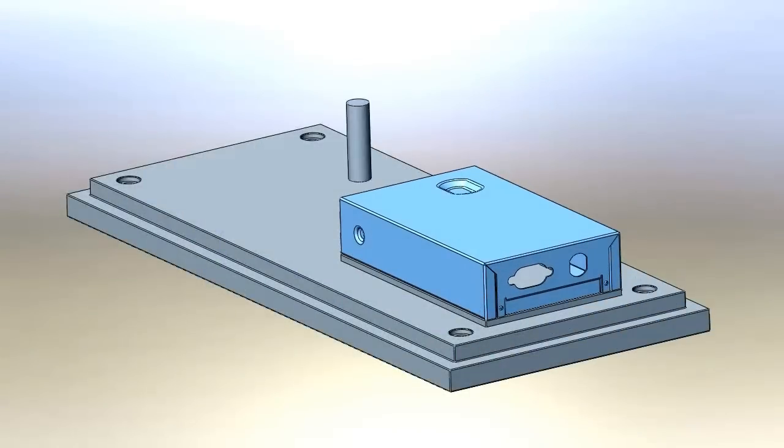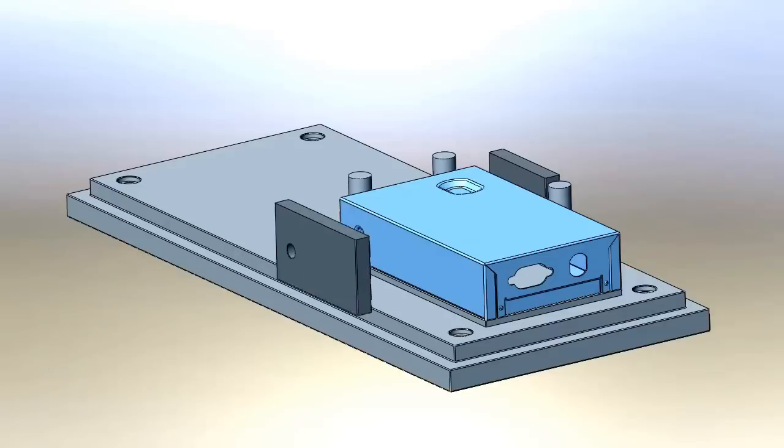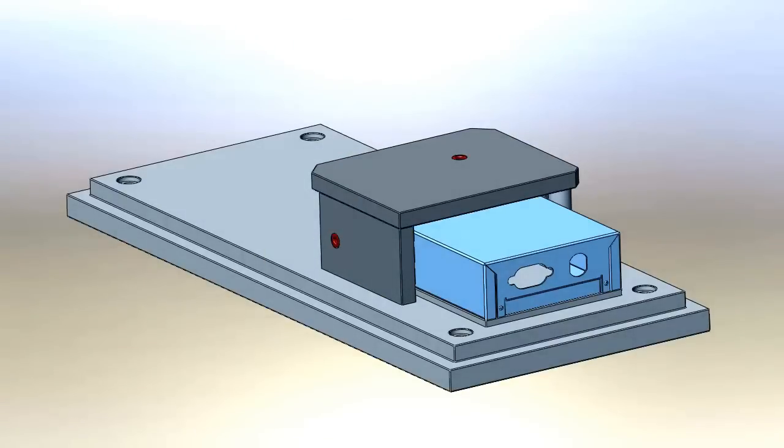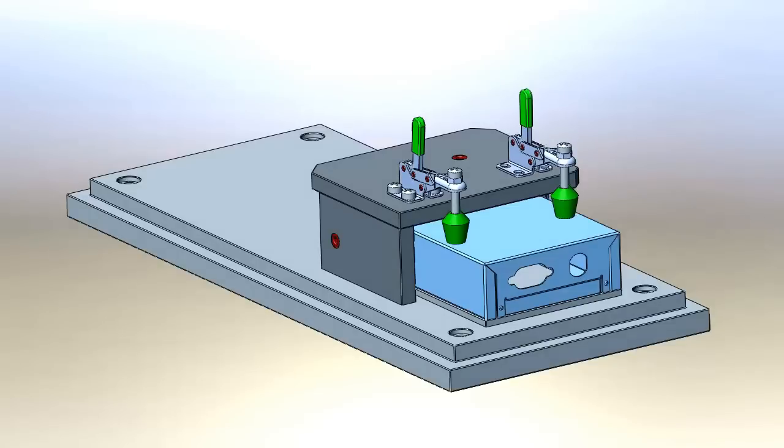Indexing pins are placed according to the part datums and are used for positioning. They also serve as risers to attach plates that house the drill guide bushings. The part is precisely located and toggle clamps are used as hold downs.